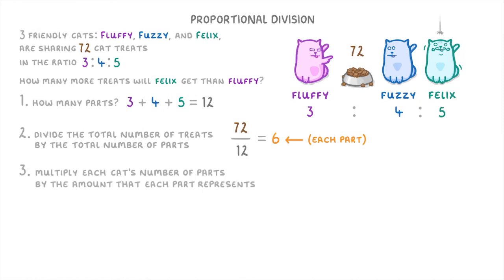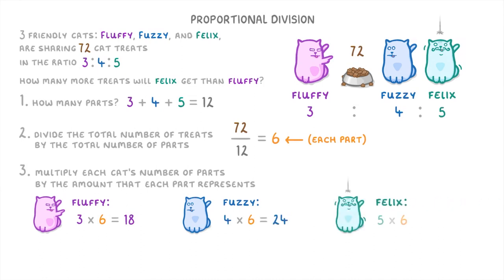Then we can multiply each cat's number of parts by the amount that each part represents, because this tells us how many treats each cat will get. So Fluffy will get 3 times 6, or 18 treats. Fuzzy will get 4 times 6, so 24 treats. And Felix will get 5 times 6, so 30 treats.